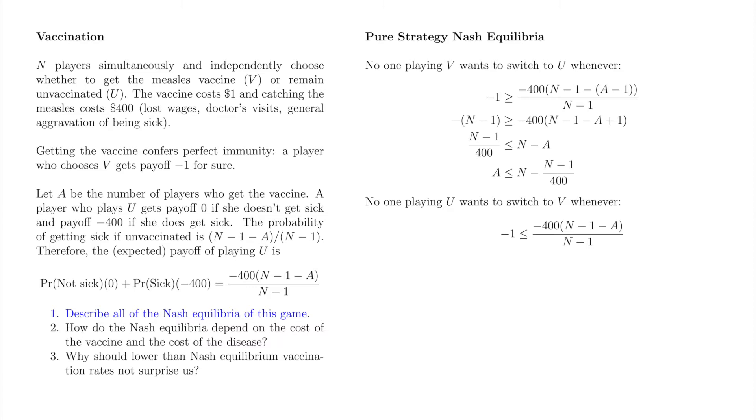Now, let's make sure no one choosing U can profitably switch to V. A player choosing U receives -400 times (N-1-A)/(N-1). If she had instead chosen V, she would have received minus 1. A player choosing U cannot profitably deviate to V when the inequality shown is true. Here are the first two algebraic steps. Be careful to remember to flip the direction of the inequality when dividing by minus 400. A is bounded below by N minus 1 minus (N-1)/400. If N equals 2, that is to say A is bounded below by 399 out of 400, or a little less than 1.